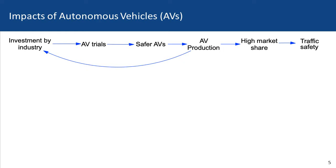There is an arrow going from AV production back to investment by industry, forming a loop. This loop is very important from the industry perspective, because when AV production ramps up there are profits which the industry can reinvest into developing safer AV vehicles.